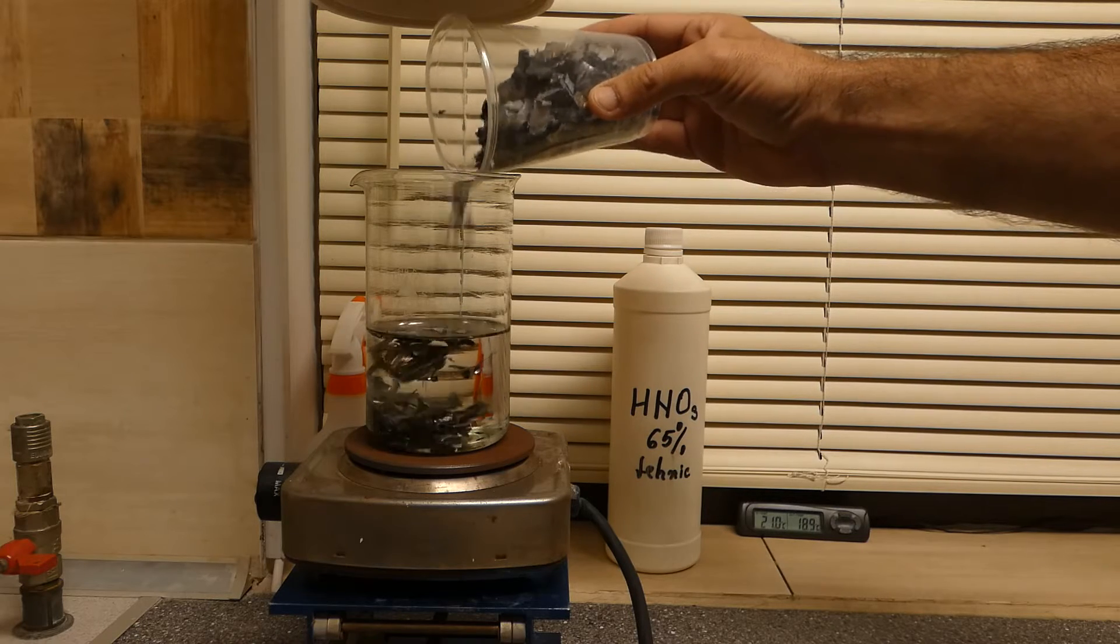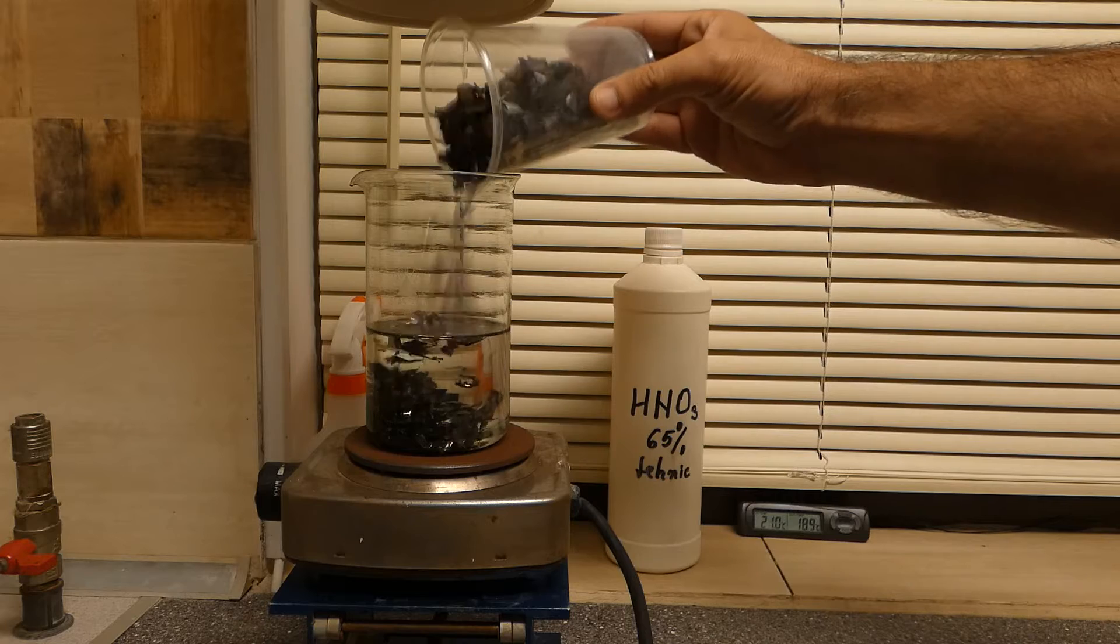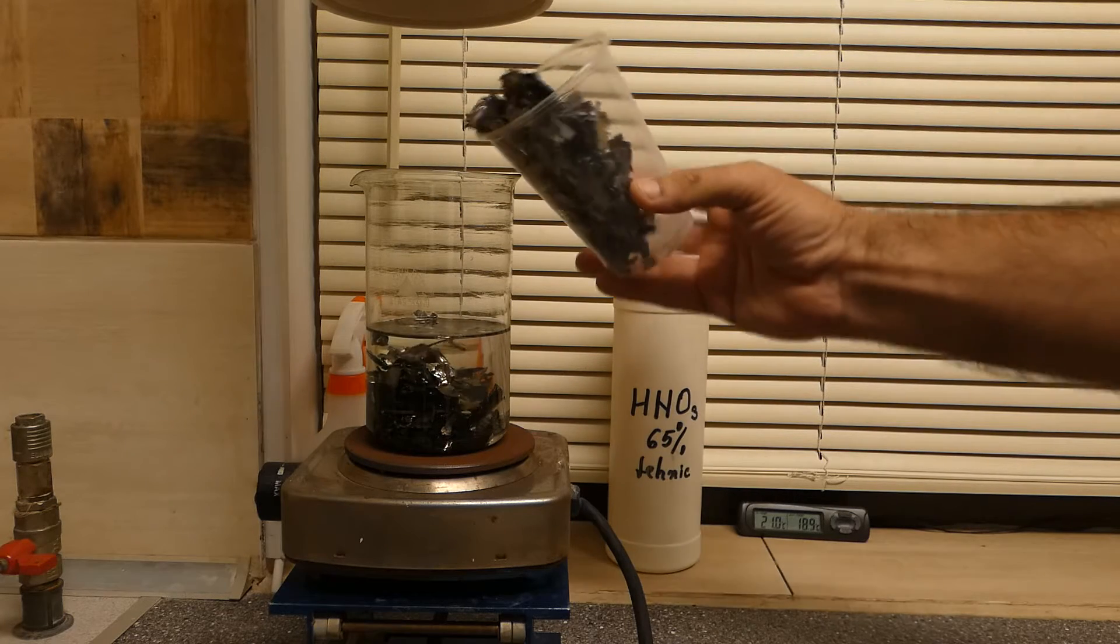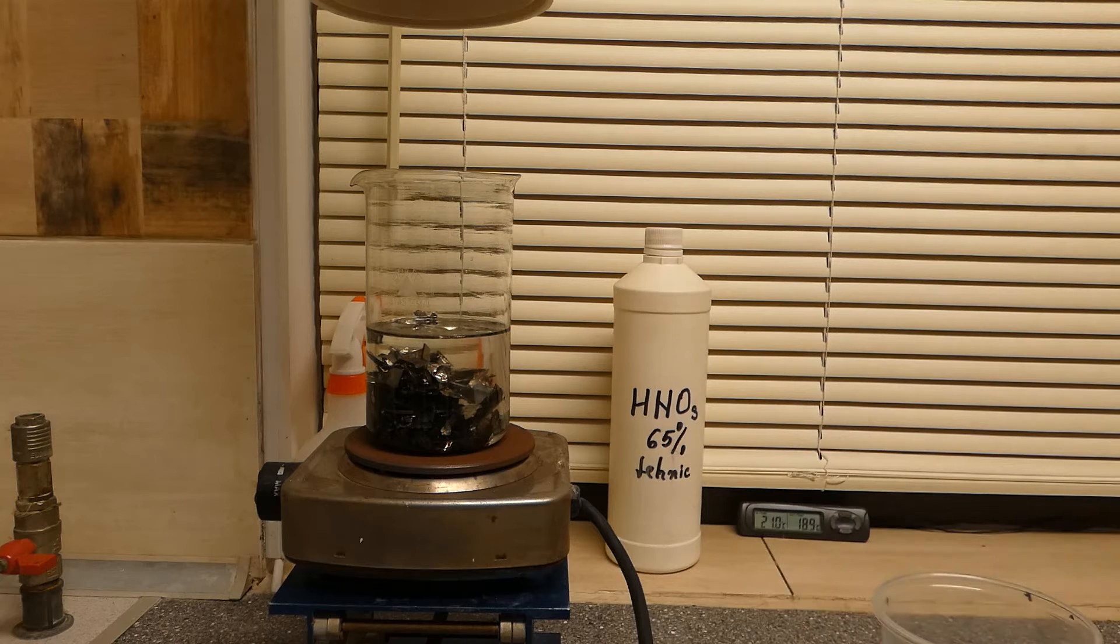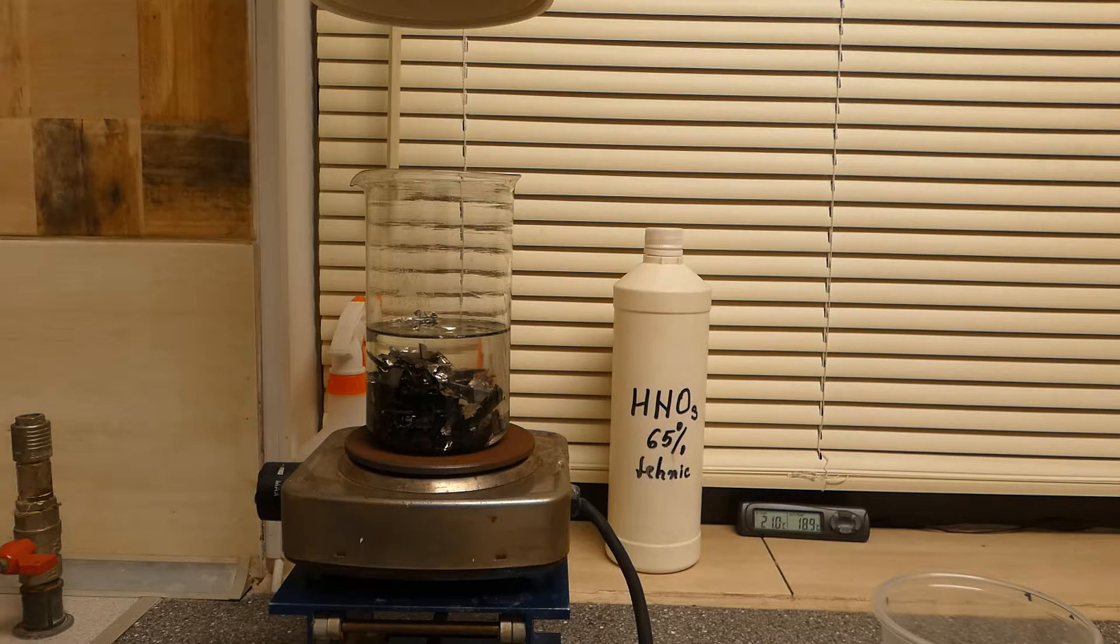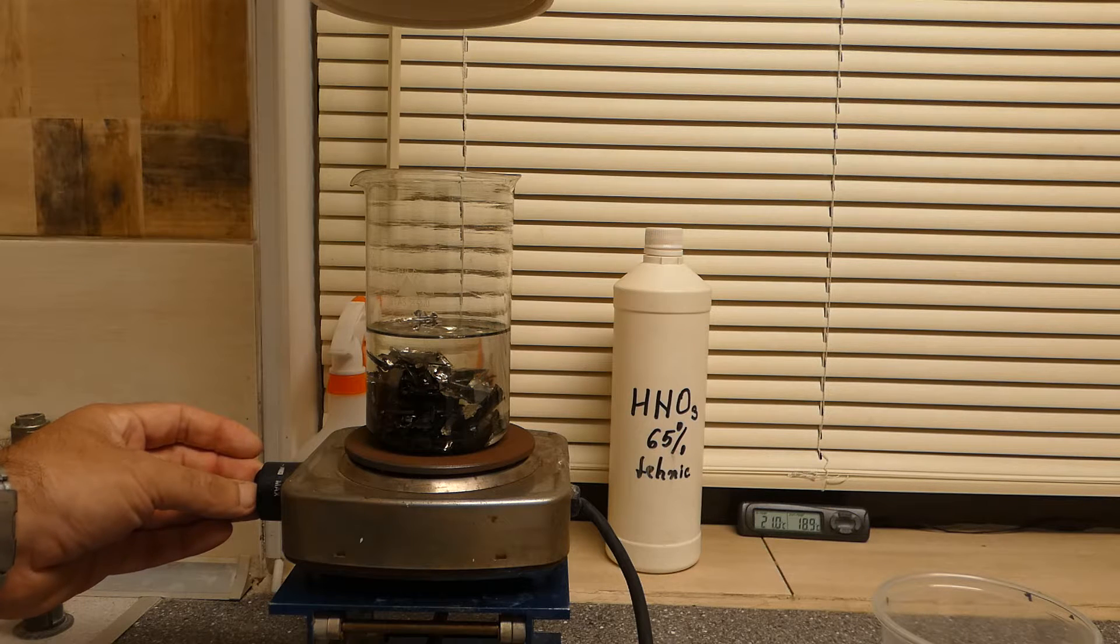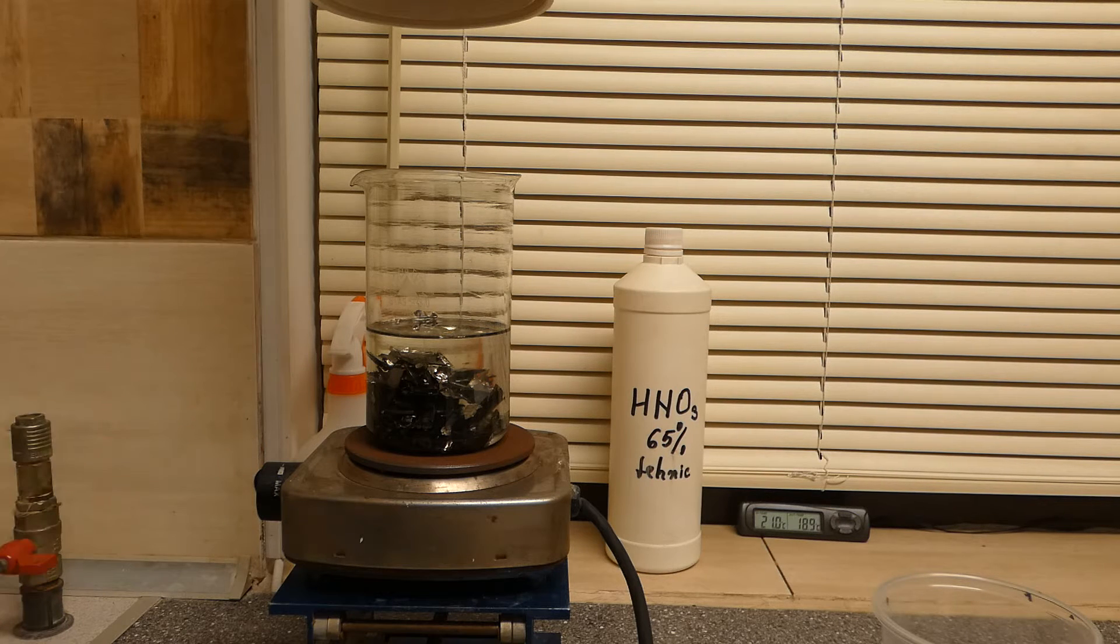To separate the platinum, I first dissolved the sheets in concentrated nitric acid. In this process, the nickel in the alloy changed to nickel nitrate and colored the solution green. To initiate the reaction, the solution must be heated to about 70 degrees Celsius, then it becomes self-sustaining because it is exothermic.